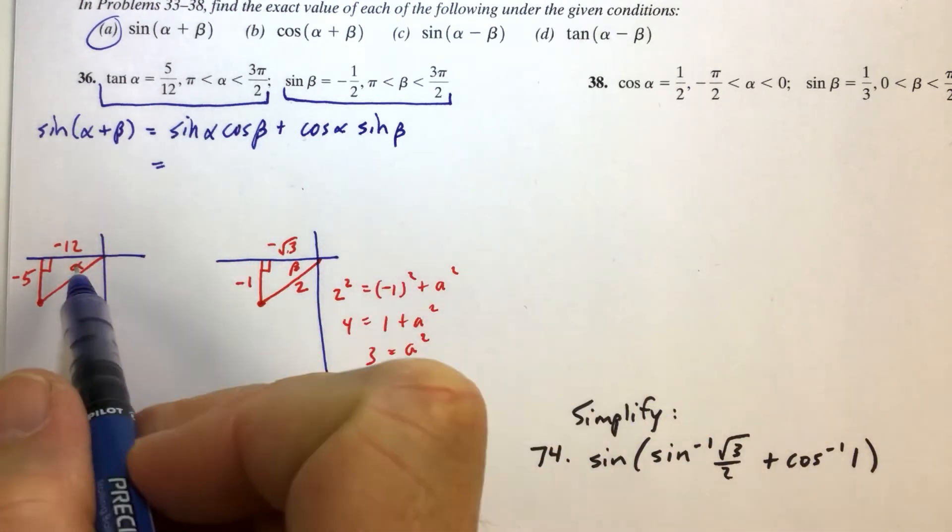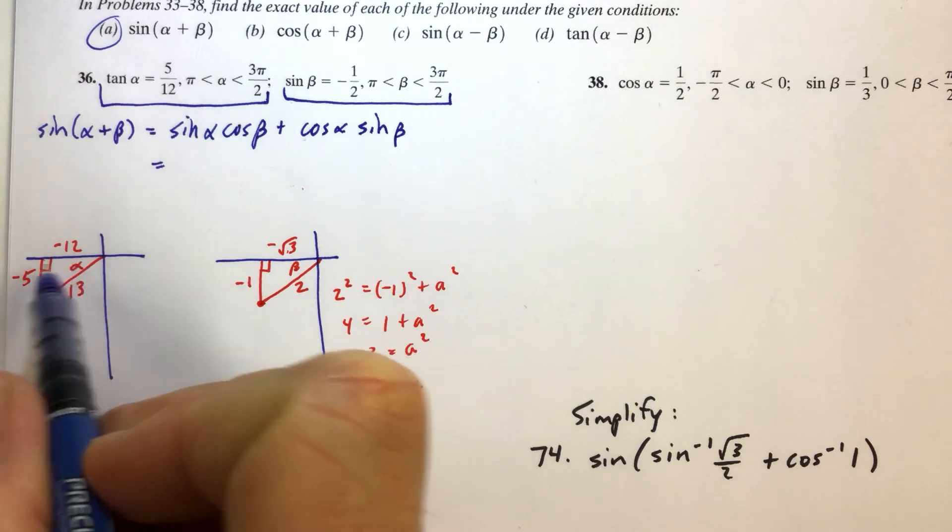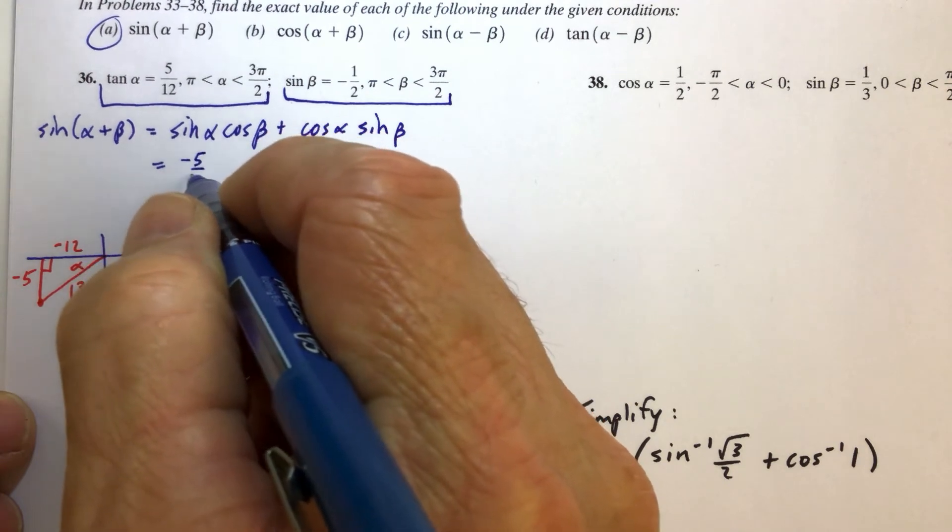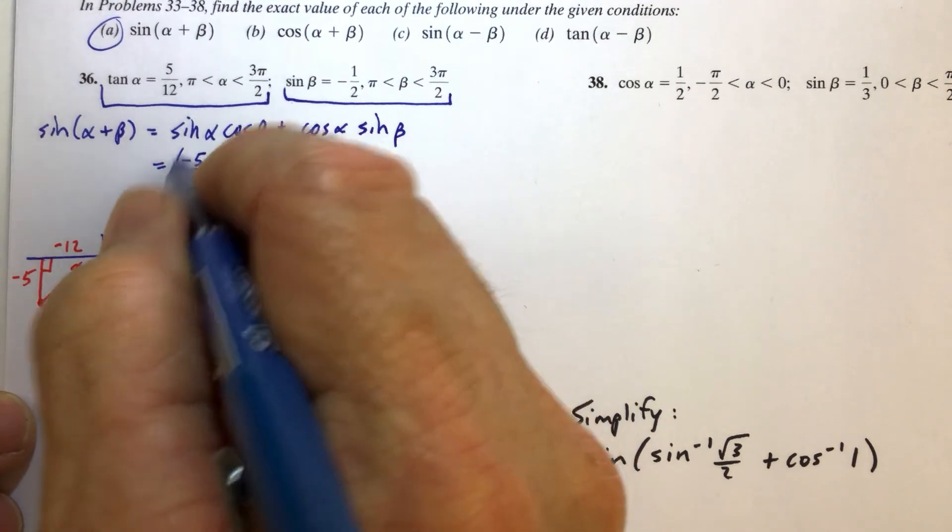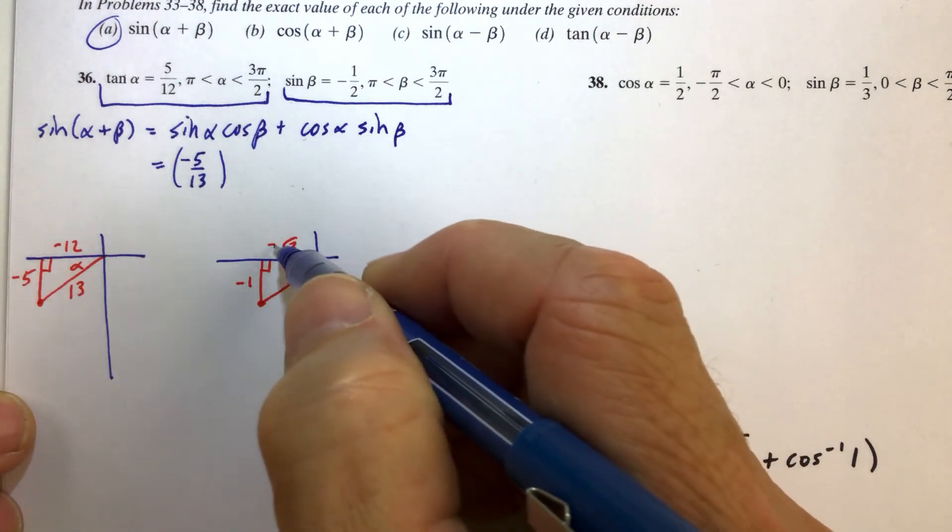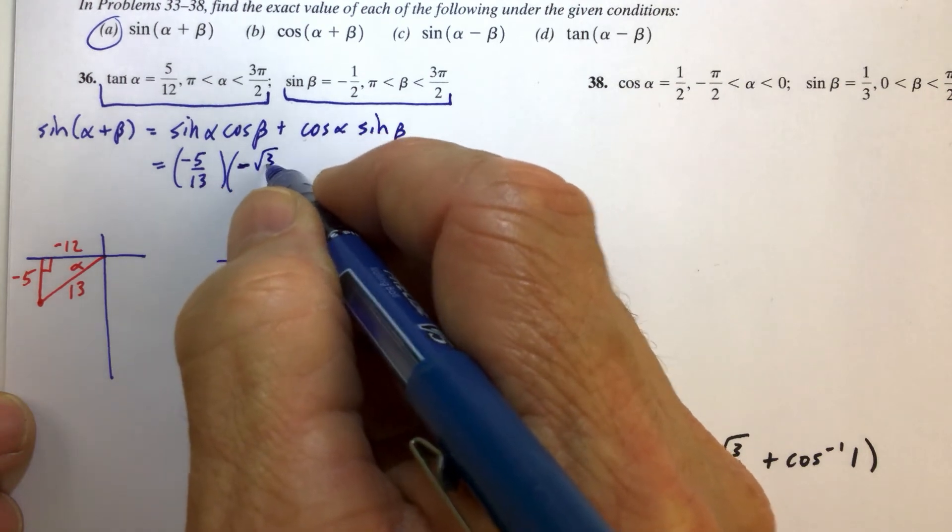The sine of alpha. The sine of alpha, this is where you really have to pay attention. The sine of alpha is equal to the opposite over hypotenuse. And alpha is in the third quadrant. So the opposite leg is negative 5, hypotenuse being 13, cosine of beta. Cosine of beta is negative rad 3 over 2. Negative rad 3 over 2.